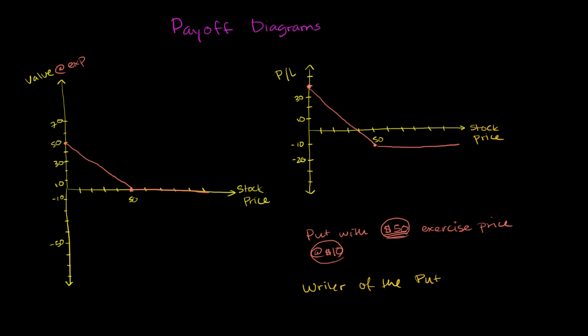The payoff diagram we just showed is the person who owns the put, but someone else had to have created the put. They said, oh, you know what? I will give you the right to sell me the stock at $50, up to some expiration date. So what does their payoff diagram look like?